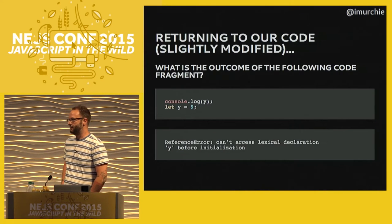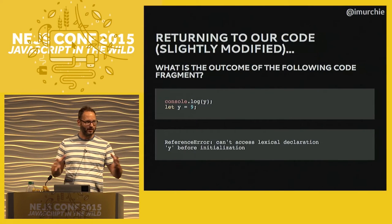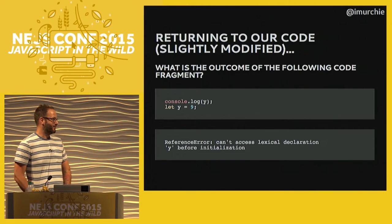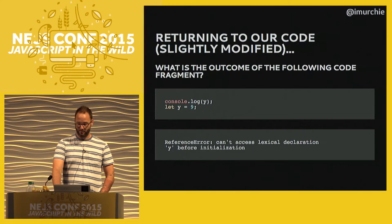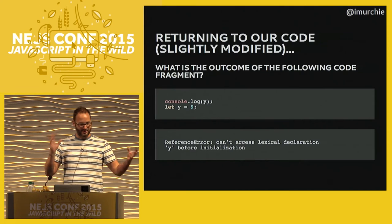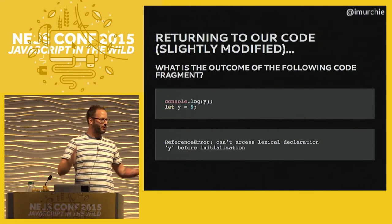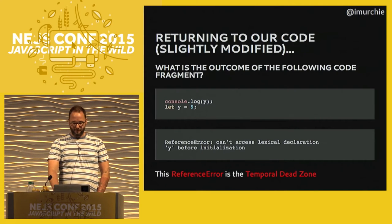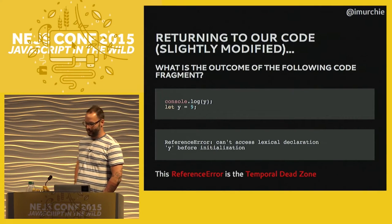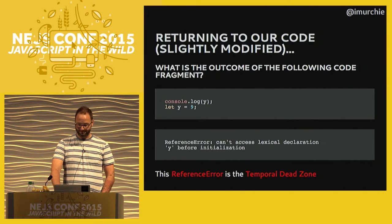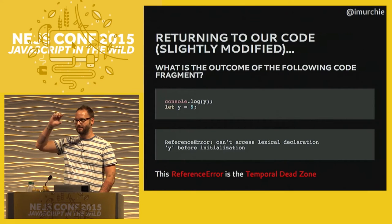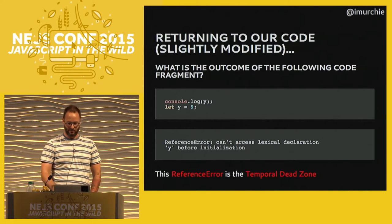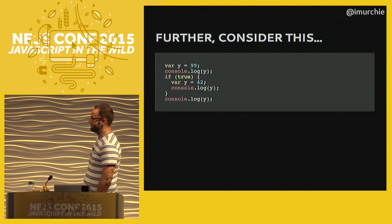...what we get is a reference error — what you'd expect coming from C. The specific message is that you can't access lexical declaration `y` before initialization. This should spark the idea that we still have a distinction between lexical declaration and initialization, which is what hoisting does. That reference error is technically the temporal dead zone — there is a time at which this variable is dead, in between where it's been hoisted to and where it is actually initialized. It will throw an error.